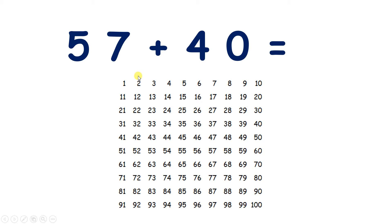Now we have 57 add 40 on the 100 square. So we find 57. And now what are we going to do? Well, we're adding 40, which is four tens. So we need to move down one, two, three, four places. And that takes us to 97. So 57 add 40 equals 97.